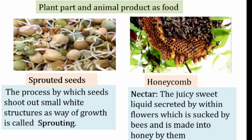Seeds are used as cereals, spices, sprouts, and for taking out vegetable oil. Sprouted seeds are seeds from which a small white structure has grown out — this means the seeds have sprouted. Honey is also another food we get from animals. Bees collect nectar from flowers — nectar means sweet juice — and convert it into honey, which they store in their hive.